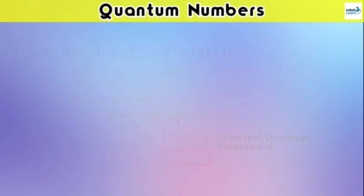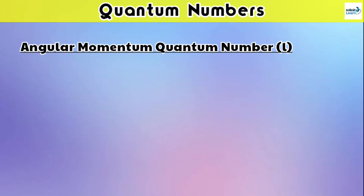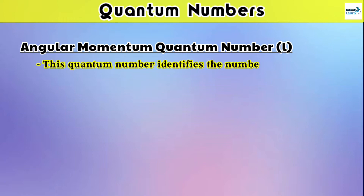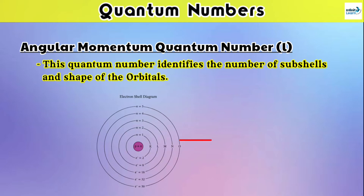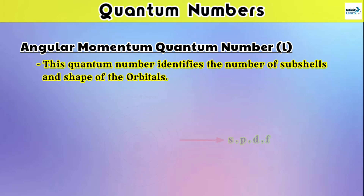Now let's move to the second quantum number, which is the angular momentum quantum number, also called the azimuthal quantum number. This quantum number identifies the number of subshells and the shape of the orbital. The subshells of the main shell are denoted by S, P, D, and F. So how can we find the number of subshells in the main shell?